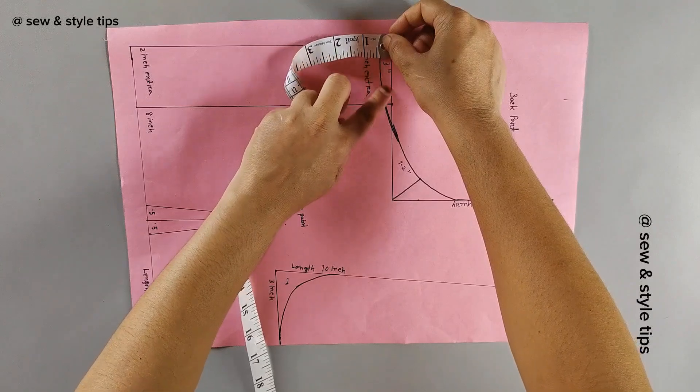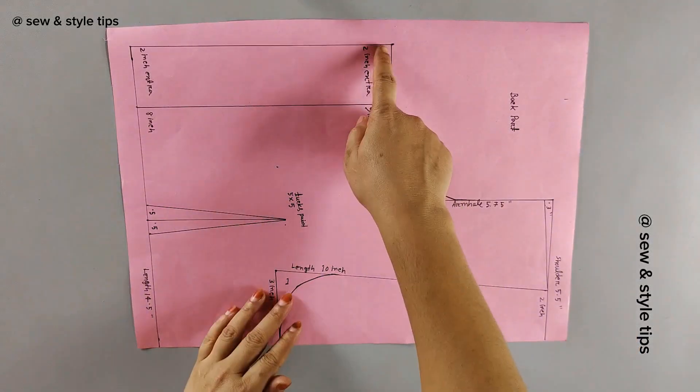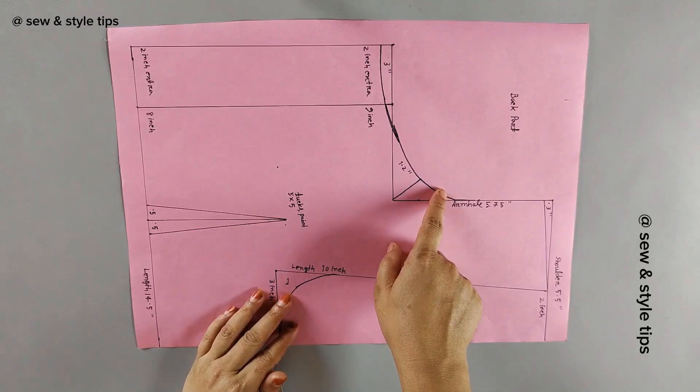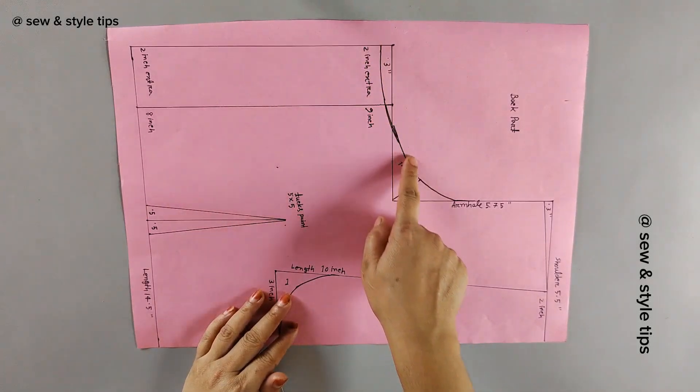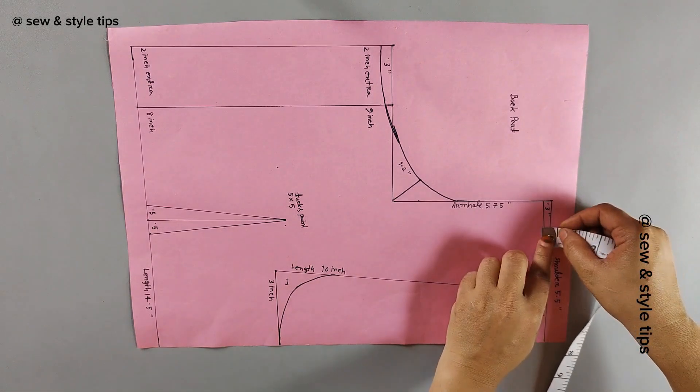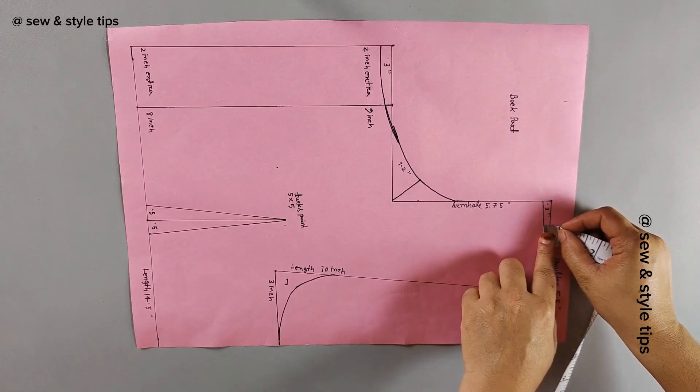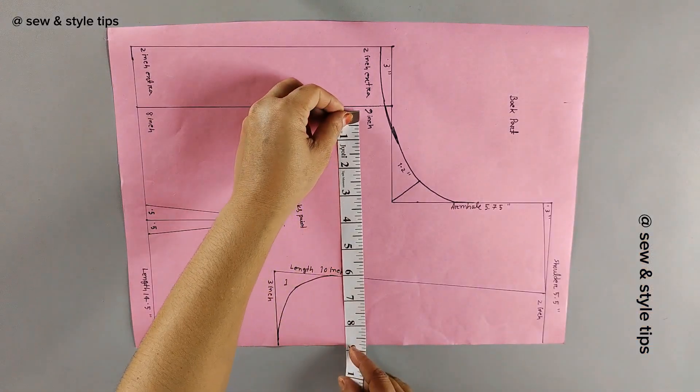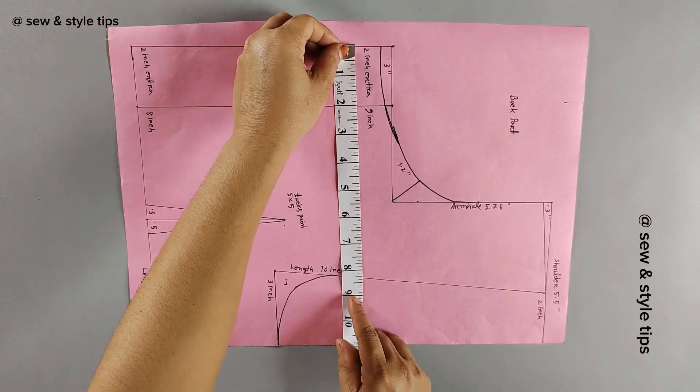Then the pattern piece goes down, and this is where the main pattern piece is located.